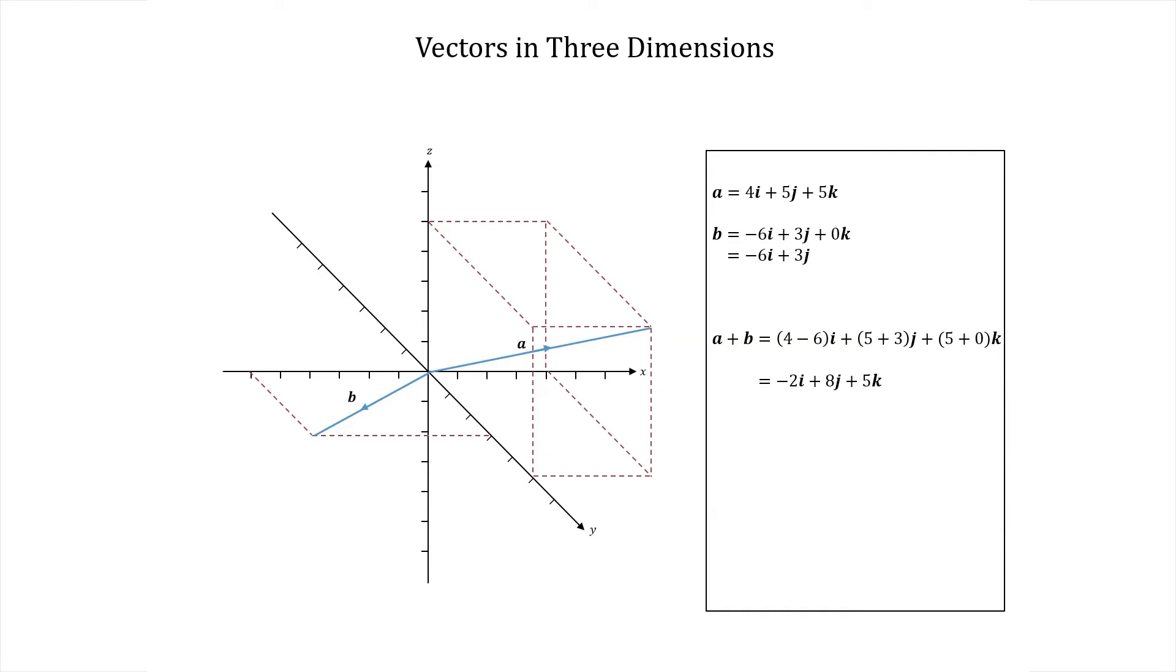Likewise, the scalar product, which we introduced in two dimensions in the previous video, is calculated in the same way as in that video. We multiply the corresponding components together and add the results up. So, we get that a dot b is 4 times minus 6 plus 5 times 3 plus 5 times 0, which equals minus 24 plus 15 plus 0, which is minus 9.